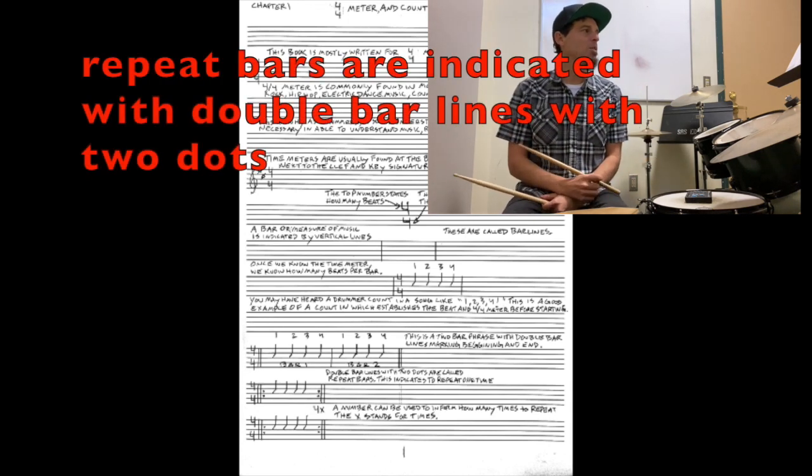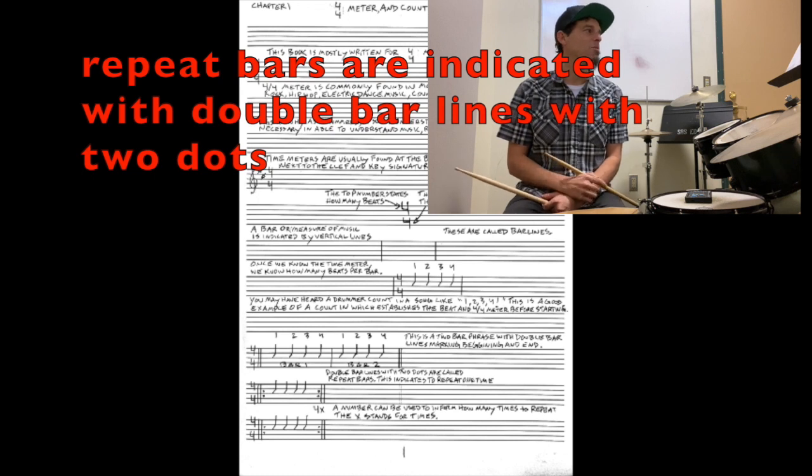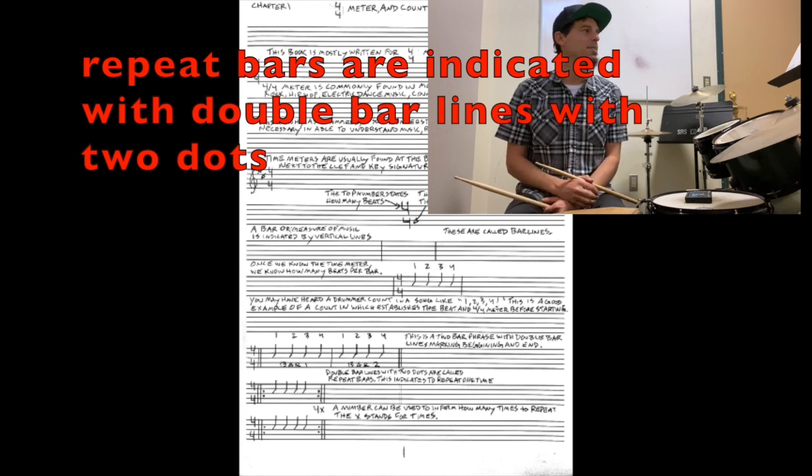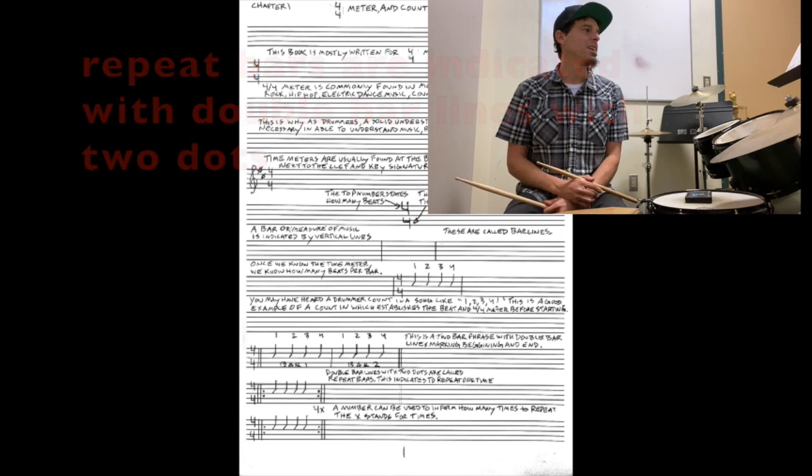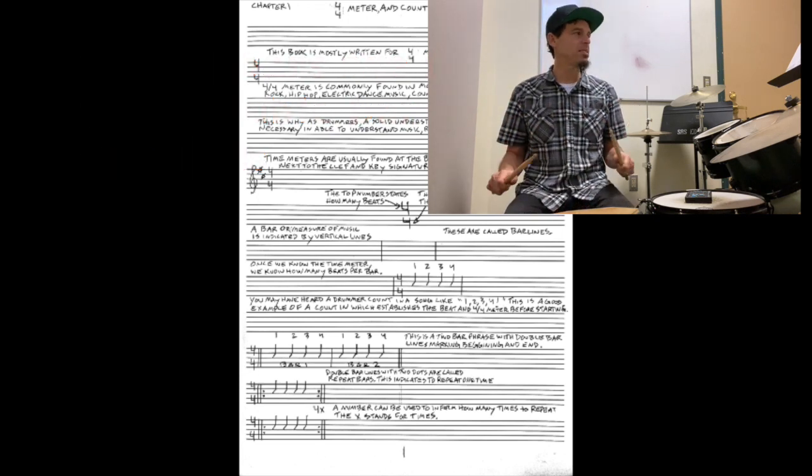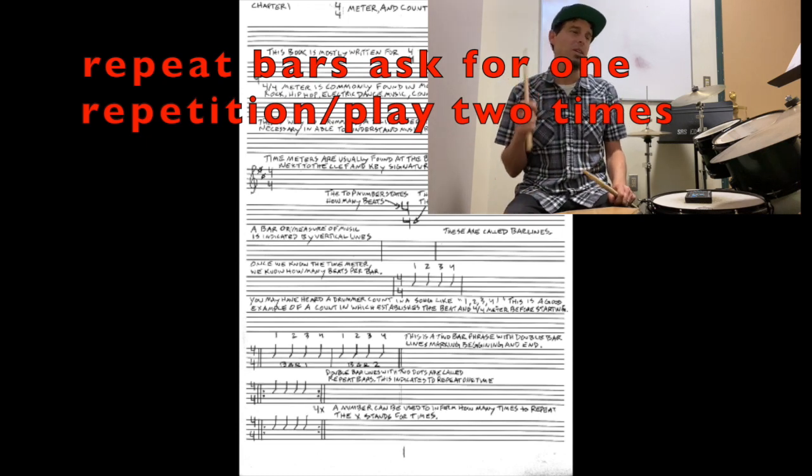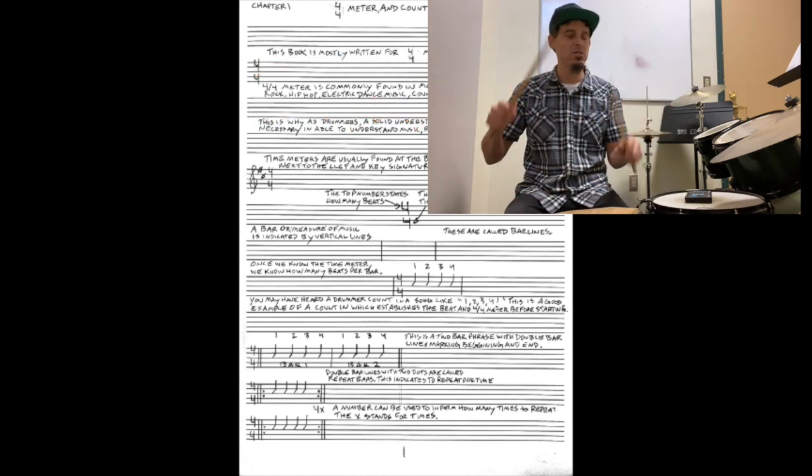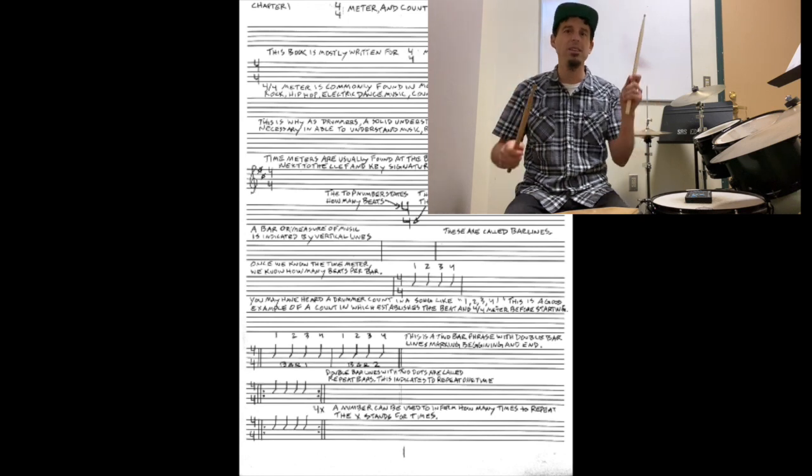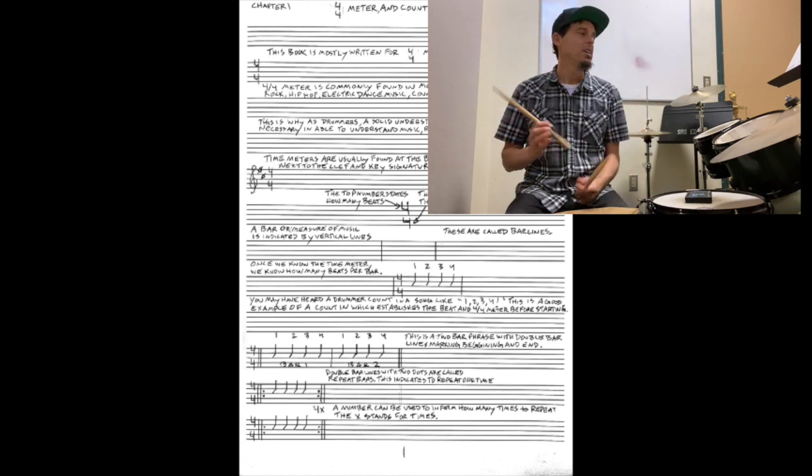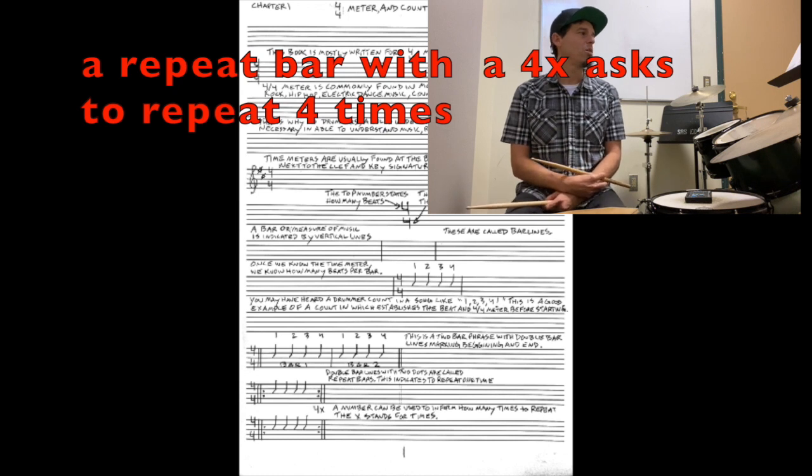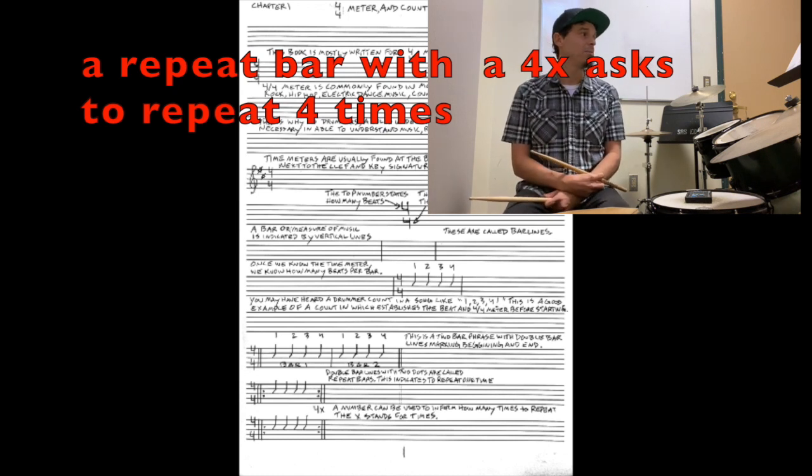Okay, now second to bottom line here, we have a repeat bar. When you see double bar lines with two dots, these are called repeat bars, and indicates repeating one time. So let's say if I see that one, I see my repeat bars, it means I'm going to repeat it just one time. So I'll go like this. One, two, three, four. Repeat, two, three, four.